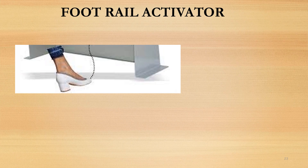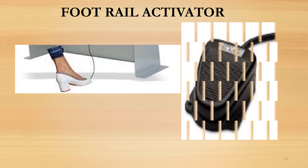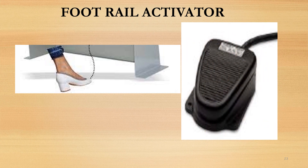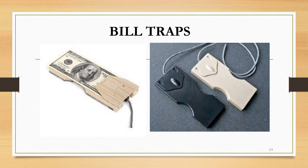Footrail activator — commonly used in banks. It is activated by placing the front of the foot to engage the activation bar placed on the floor, in such a position that tellers may activate the alarm. Bill traps — usually placed in the teller's cash drawer and connected to the alarm system using a wire connector.